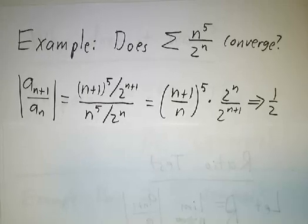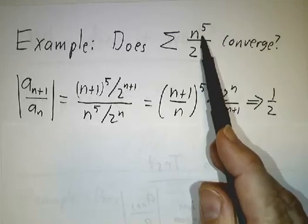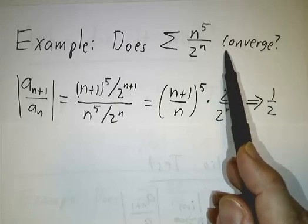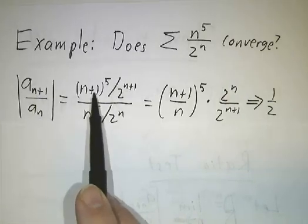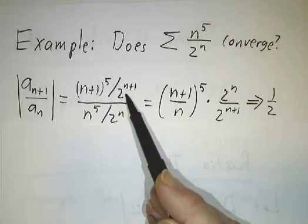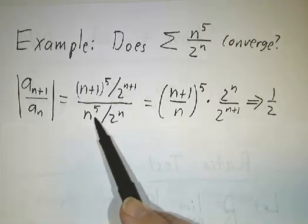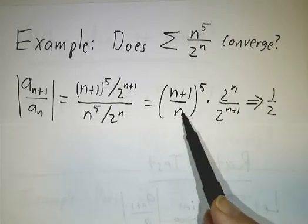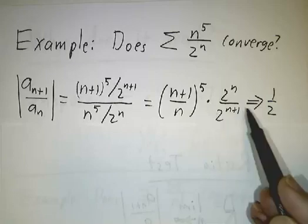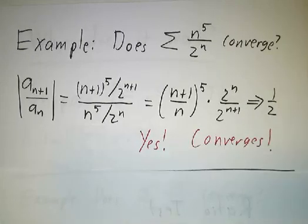First example: the sum of n to the fifth over 2 to the n. If you write out the first few terms they look pretty bad, but after a while the terms start to get smaller. Looking at the ratio, you take (n+1)^5 over 2^(n+1) divided by n^5 over 2^n. Almost all the factors cancel — there's just one factor of two left in the denominator, giving 1/2. Then (n+1)^5 divided by n^5 is ((n+1)/n)^5, and (n+1)/n approaches 1, so that factor approaches 1. Divided by 2, the limit approaches 1/2. So r = 1/2, which is less than one, and the series converges.